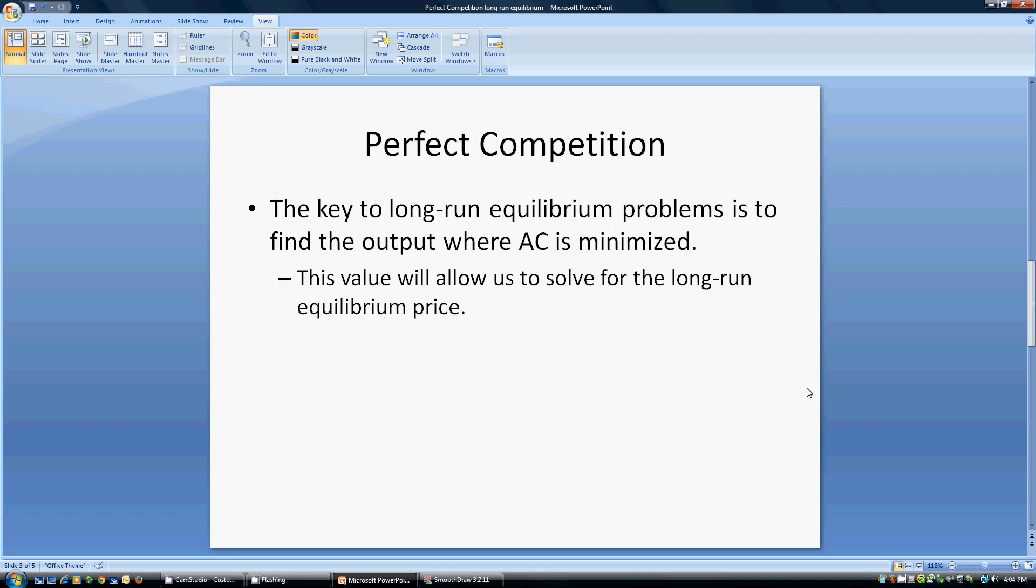The key to long-run equilibrium problems is to find the output where average cost is minimized. This value will allow us to solve for the long-run equilibrium price.